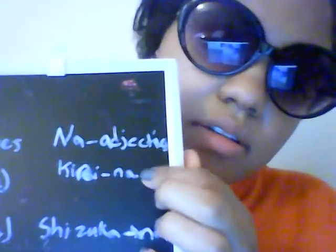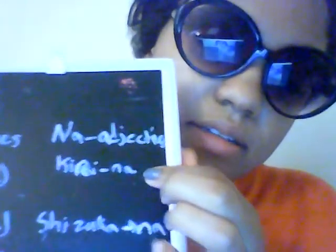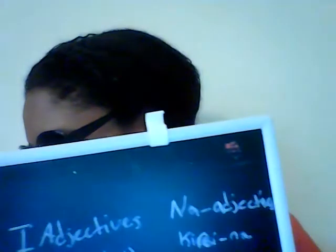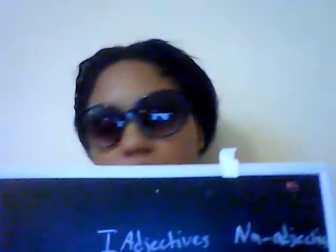There are also Na-adjectives. Here we have kirei na, shizukana, and yumei na. Shizukana means 'quiet,' yumei na means 'famous,' and kirei na means 'pretty.'